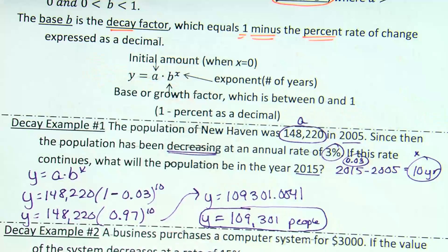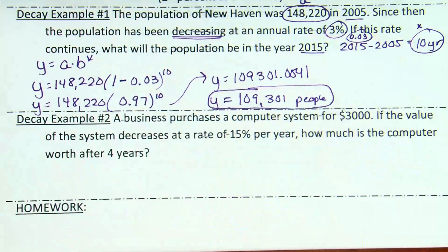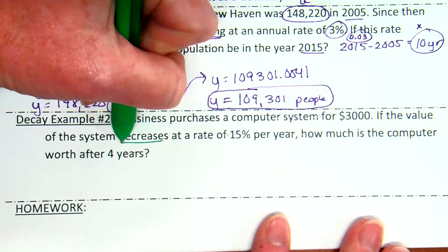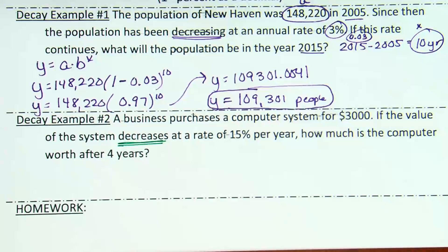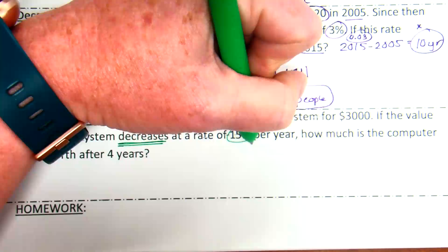Okay. Last one. A business purchases a computer system for $3,000. The value of the system does what? Decreases at a rate of 15% per year. How much is a computer worth after four years? So, if it's decreasing 15%, what do we know about 15%? Yeah. And as a decimal? 0.15. They purchased the computer system for $3,000. Where does that $3,000 go? Initial amount. Decreases, which tells me we're going to subtract. And how much is it worth after four years? So, that is my X, so to speak. Sorry to say T, but there's no T's in this problem.